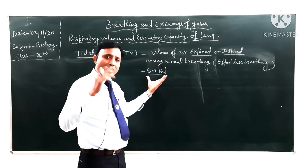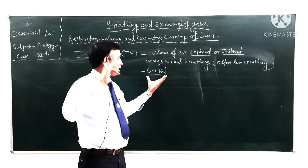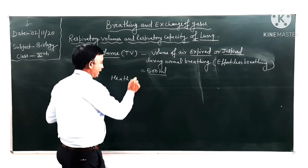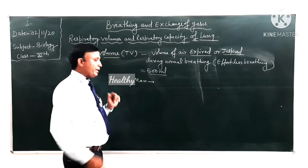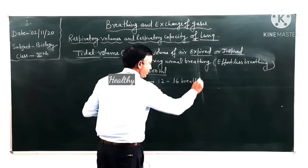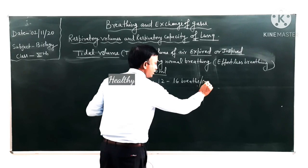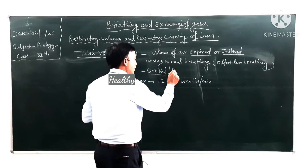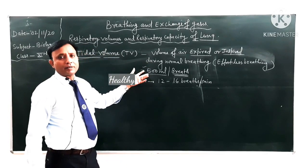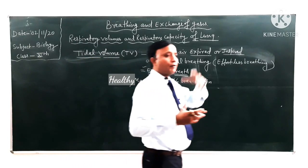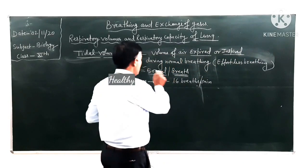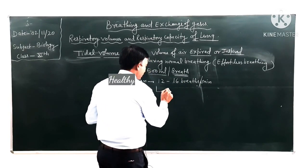The volume of air expired or inspired during normal breathing is 500 ml. When a person normally inhales, they take in 500 ml of oxygen, and when they exhale, they expire 500 ml of carbon dioxide. In a healthy man, normal breathing occurs at 12 to 16 breaths per minute.